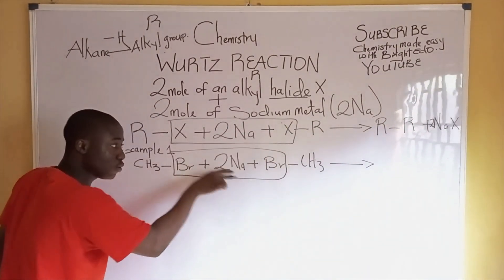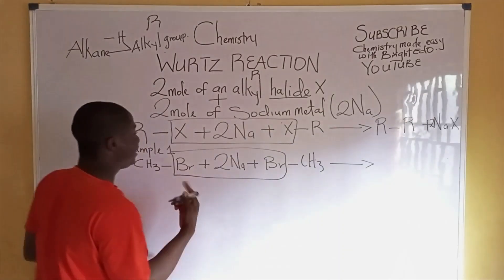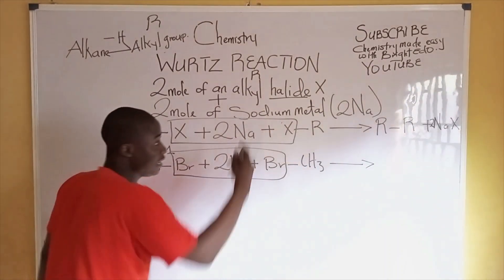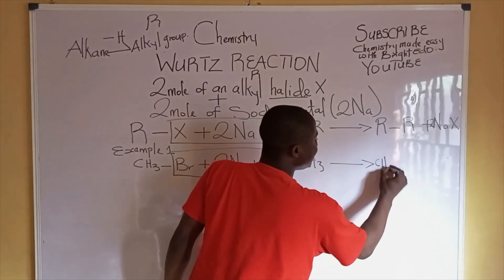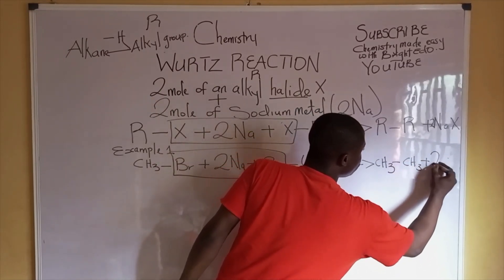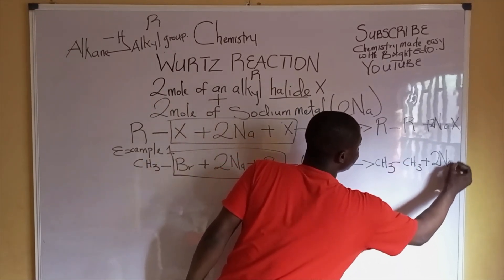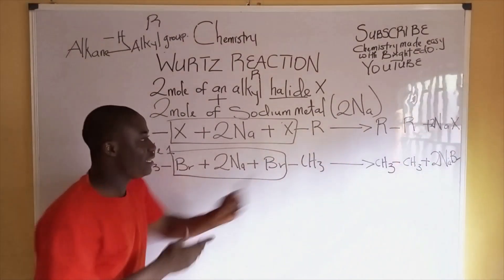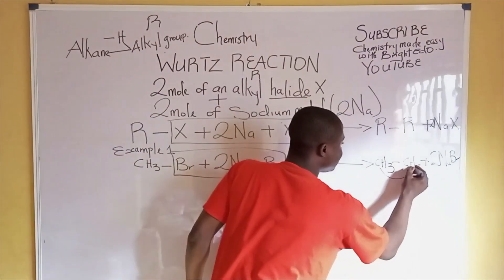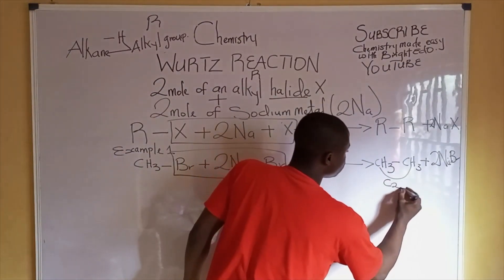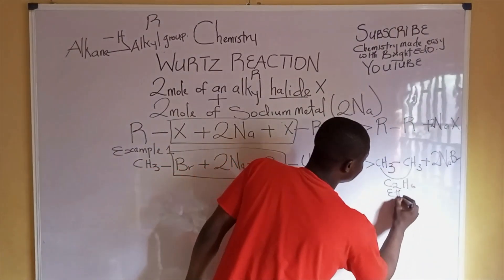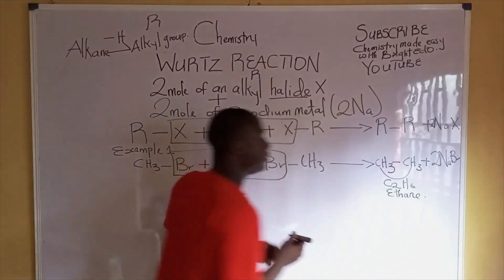Following the reaction mechanism, the two atoms of bromine combine with the two atoms of sodium. The two alkyl groups combine together to form CH3-CH3, plus two moles of sodium bromide. Compressing the formula gives us C2H6, which is called ethane.